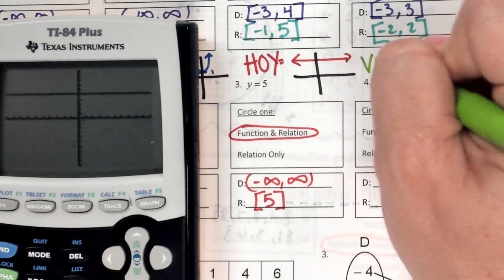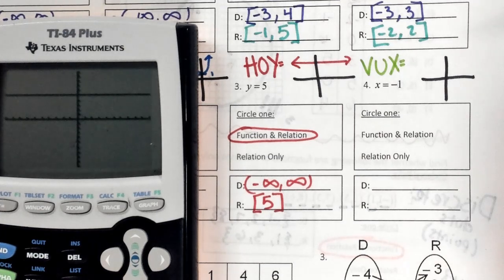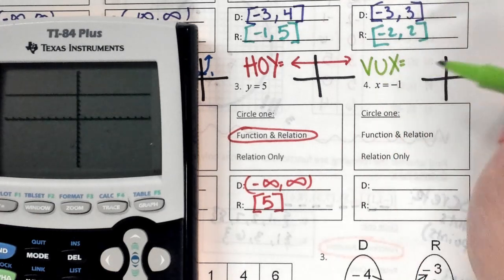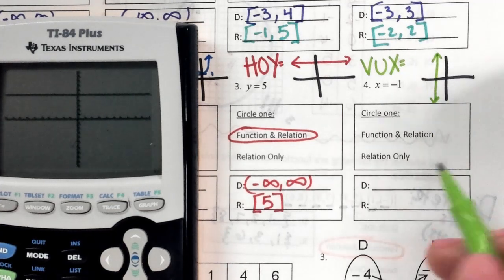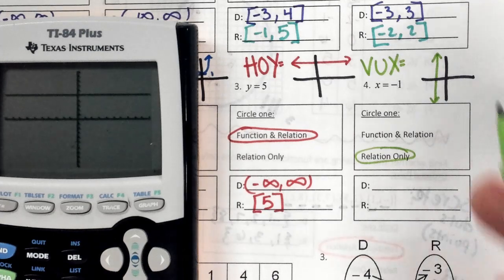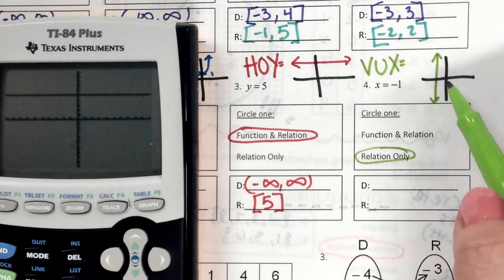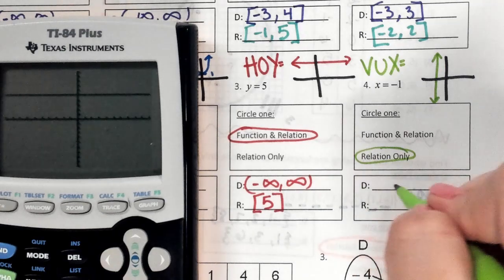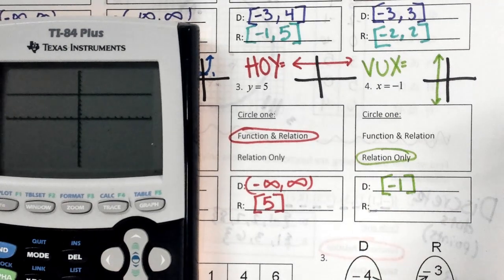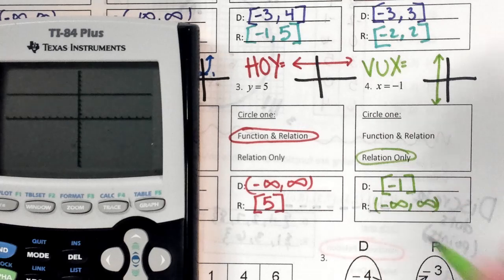VUX: this is an x-equals equation, and your calculator does not let you type these — that's how you know right away something's different. It's a vertical line, undefined slope, x equals negative 1. This is NOT a function — if I drew a vertical line over it, it would touch an infinite number of times. Domain: the only side-to-side it ever is, is negative 1. But the range goes down forever and up forever: negative infinity to positive infinity.